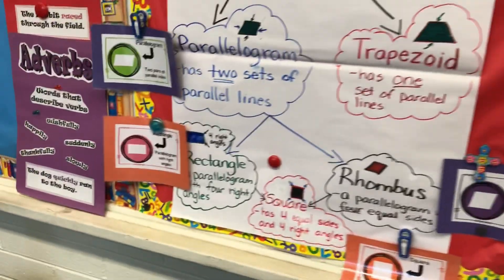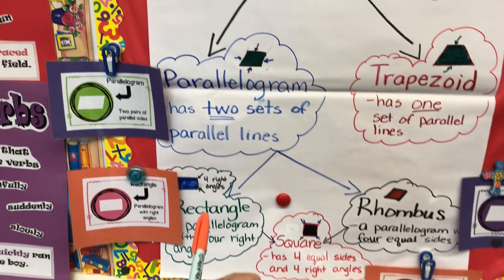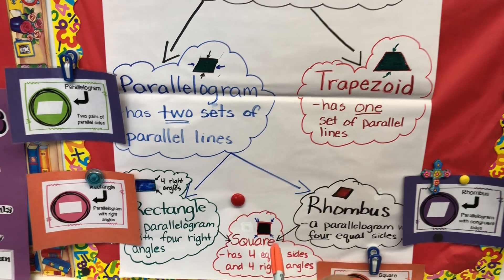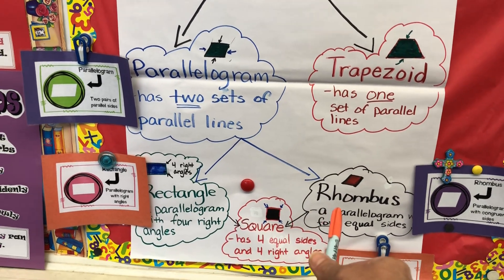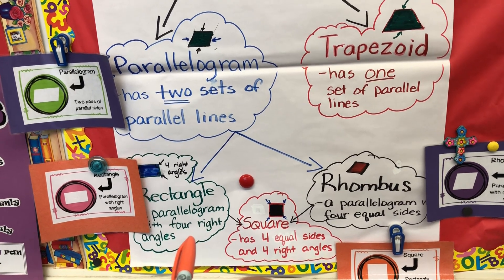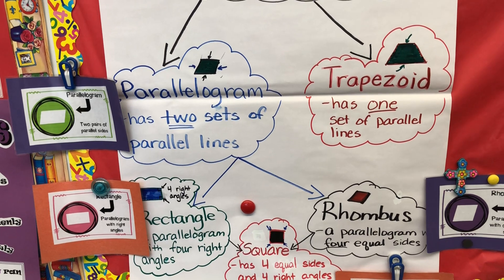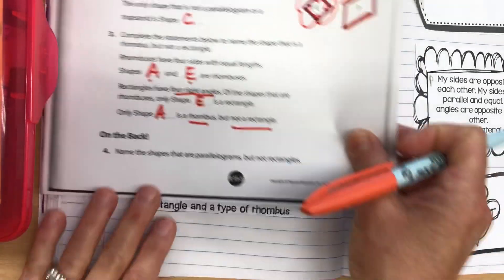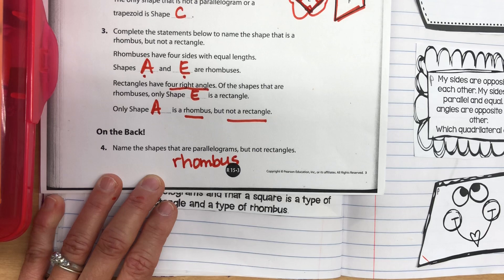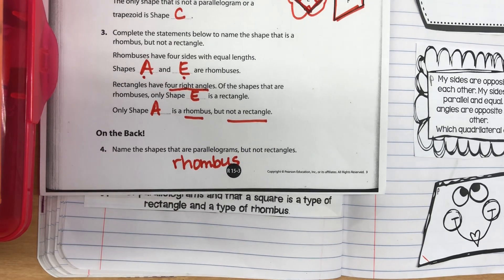Name the shapes that are parallelograms but not rectangles. We want something that's a parallelogram but not a rectangle. A square is actually a rectangle because it has four straight sides, two pairs of parallel lines, and four right angles. So it has to be the rhombus — a rhombus has four equal sides but does not have right angles, so it's the only parallelogram that is not a rectangle.